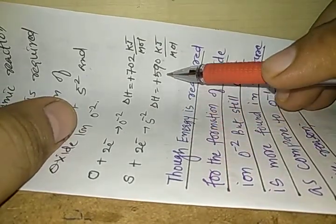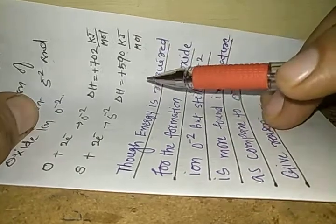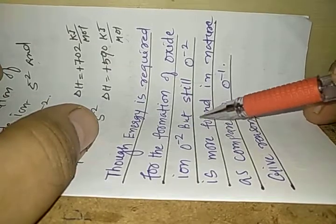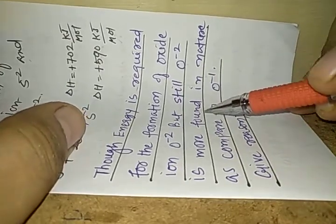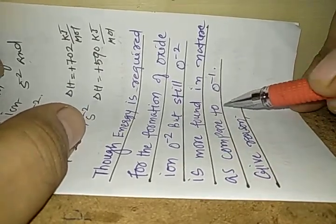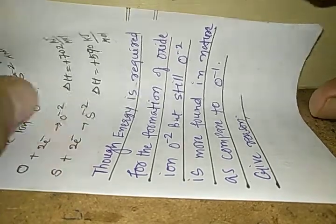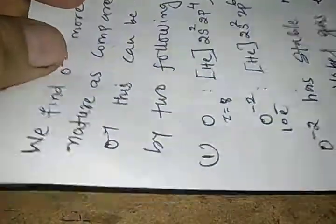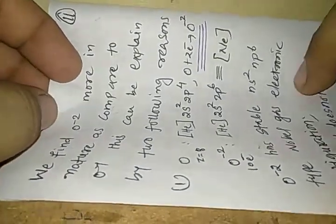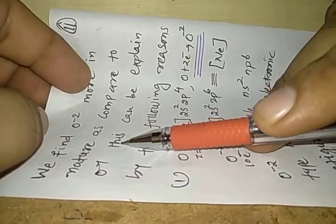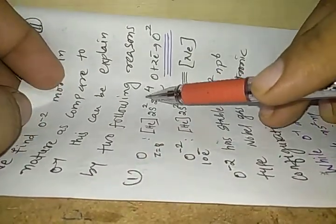Though energy is required for the formation of oxide ion O minus 2, O minus 2 is still more commonly found in nature as compared to O minus 1. What is the reason? We need to understand the reason why we find O minus 2 more in nature as compared to O minus 1. This can be explained by the following reasons.